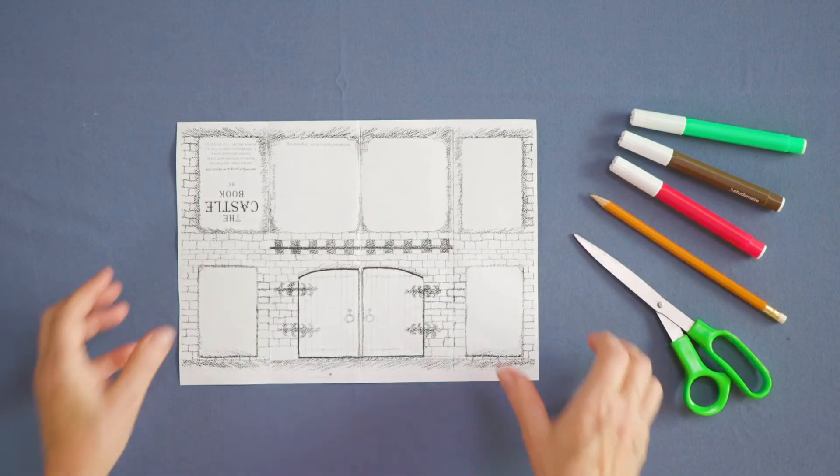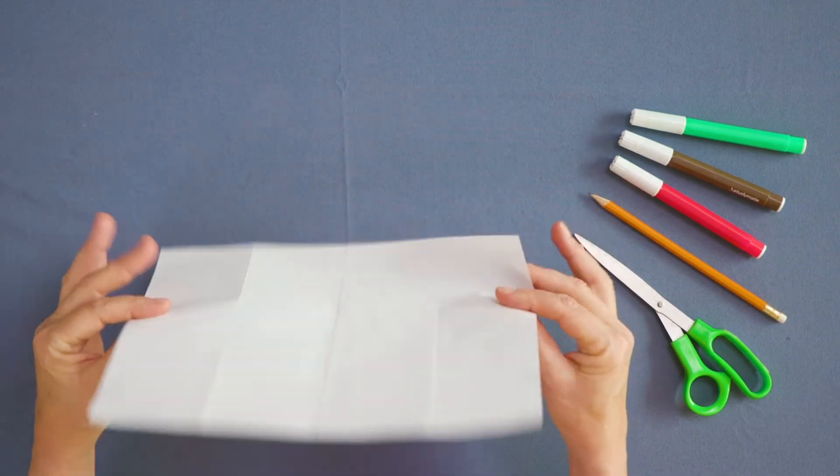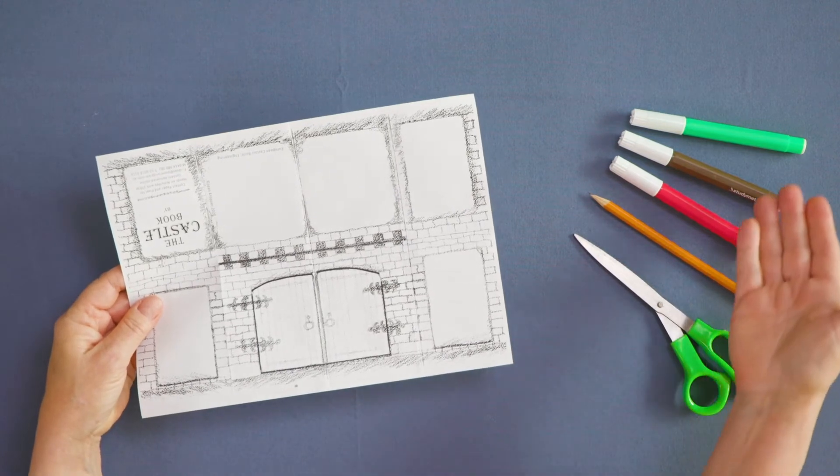Okay, let's begin. We start with the template for the castle book. The tools needed are scissors, a pencil or pen, and colored markers.